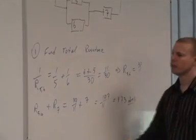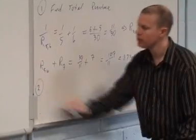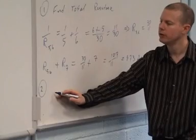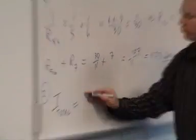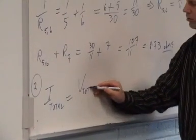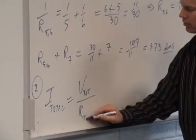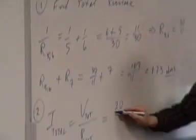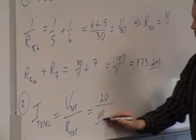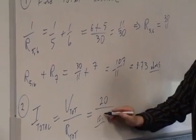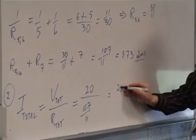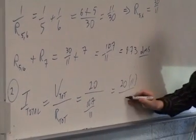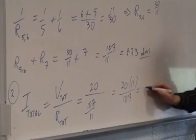Now we've got the total resistance. What's the next thing we do? To find I total, I total is equal to V total over R total. The V total I'm given is 20, and the R total is 107 over 11. So I could re-invert, and that's equal to 20 multiplied by 11 over 107, which is 220 over 107 amps.